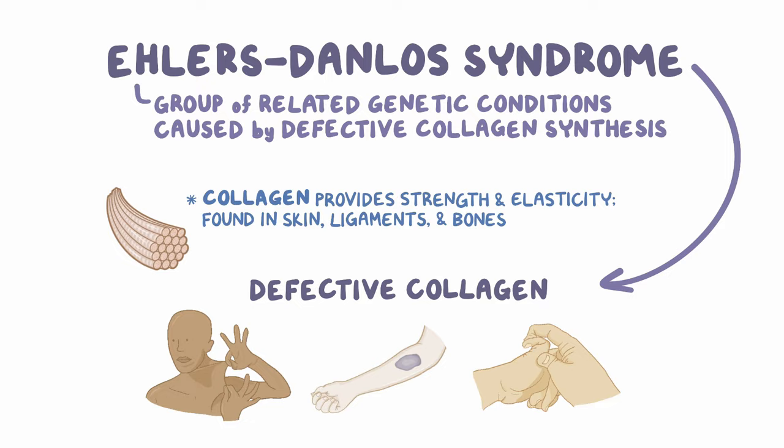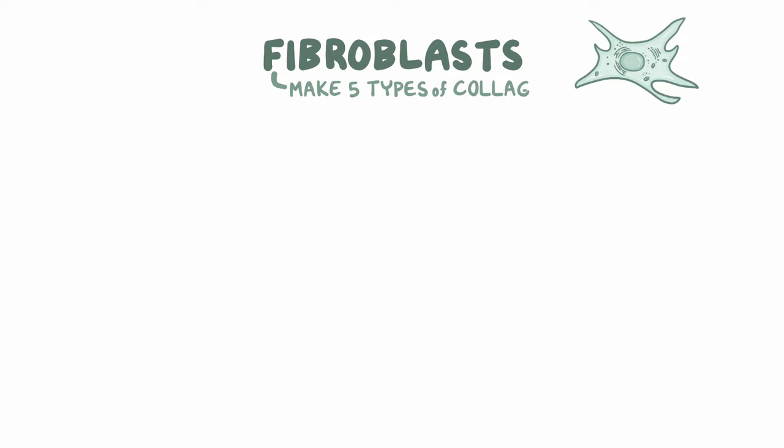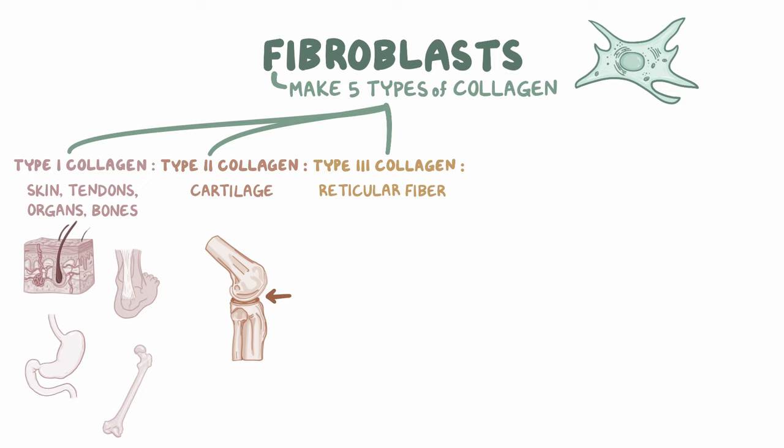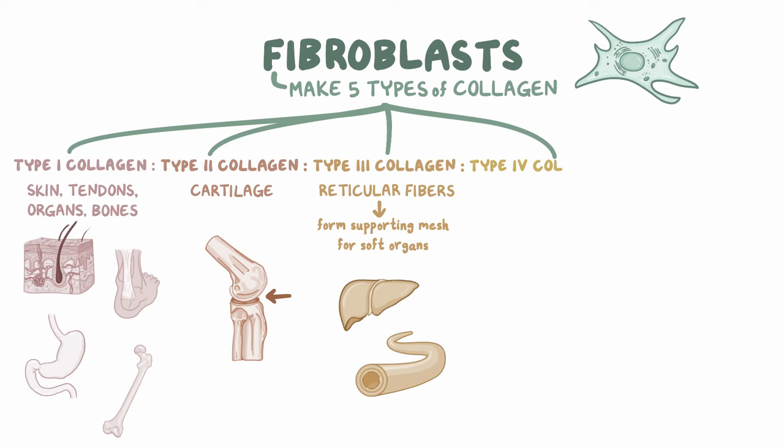The cells that produce collagen are fibroblasts, and they make five types of collagen. These five types have specific parts of the body they call home. Type 1 collagen makes its home in the skin, tendons, organs, and bones. Type 2 collagen makes its home in the cartilage. Type 3 collagen, in reticular fibers, forms a supporting mesh for soft organs like the liver and blood vessels.